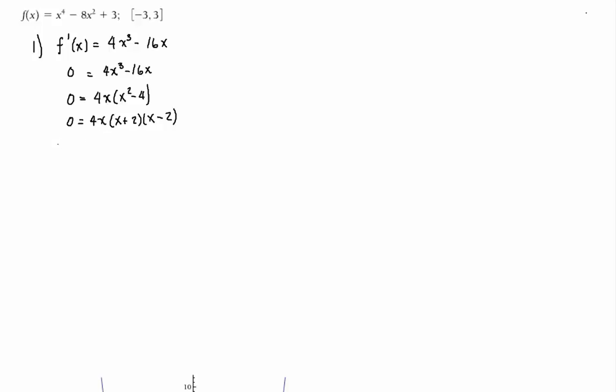So our critical numbers are x = 0 when this term is 0, when this term is 0 you get x = -2, and when this term is 0 you get x = 2.